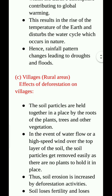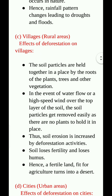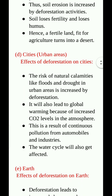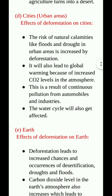Effects of deforestation on villages. The soil particles are held together by the roots of plants, trees and other vegetation. In the event of water flow or high speed wind over the top layer of soil, the soil particles get removed easily as there are no plants to hold them in place. Thus, soil erosion is increased by deforestation. Soil loses fertility and humus, hence a fertile land turns into a desert.